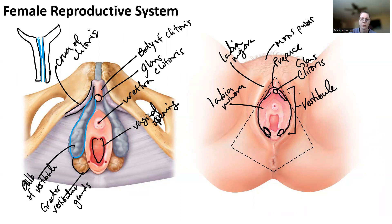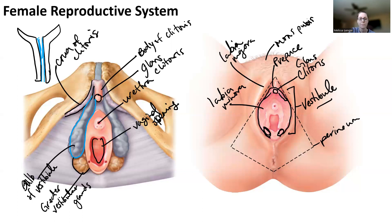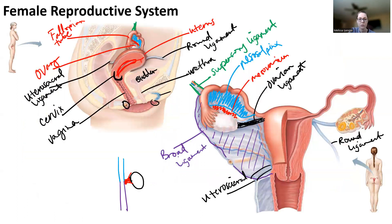The vulva is all of the external genitalia together, whereas the vestibule is just the opening where the clitoris, the urethra, and the vagina are. And then this diamond-shaped area is the perineum, which is basically the space that goes between your legs. That's pretty much it for the reproductive system of females. From class, I think the hormones were much more difficult, which I'll make some videos for also.